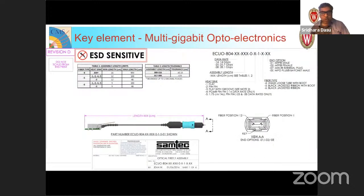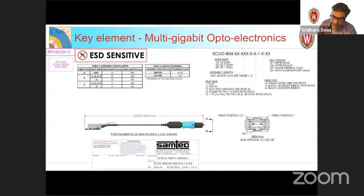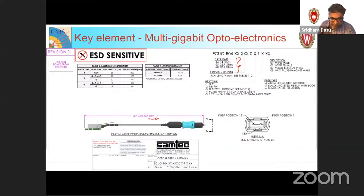Another important component is optoelectronics. We need thousands of fibers to take data at 25 Gbps, and these need to be small enough to put several on one card. Using miniature components from companies like Samtec, this particular link can carry up to 12 optical links in a package less than a centimeter in size, each at 12×25 Gbps. This is the technology we use to bring data in.